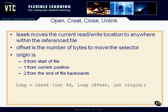You have to select an origin. The origin can be 0, meaning we take an offset jump from the start of the file. If the origin is 1, we move forward a number of bytes from the current position. If you use a negative number with 1, you will back up in the file from your current position. If you select 2 for your origin, that goes to the end of the file and runs backwards.